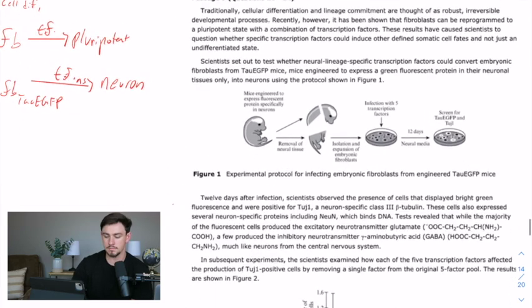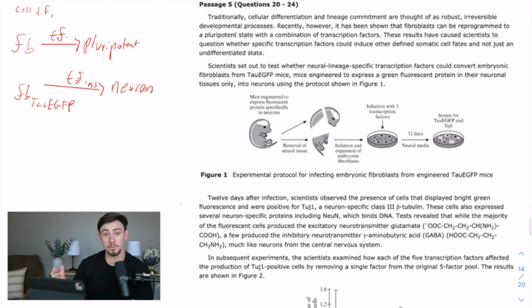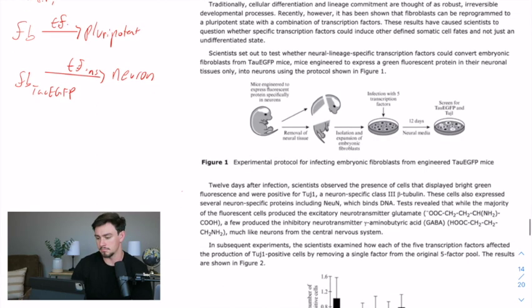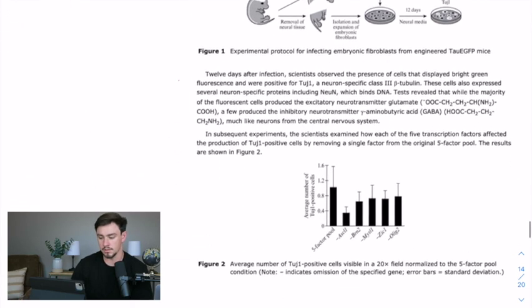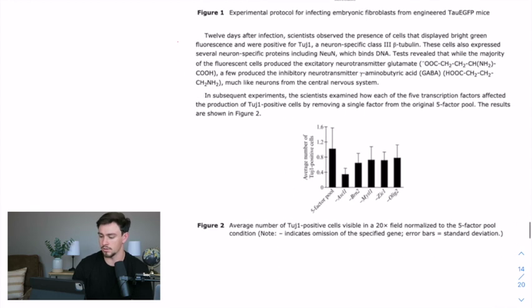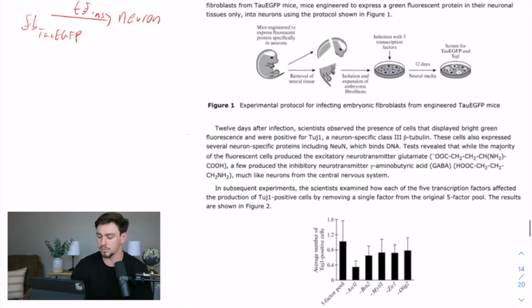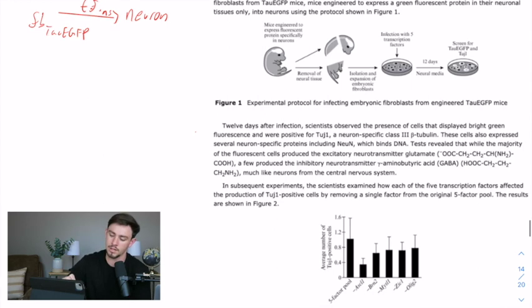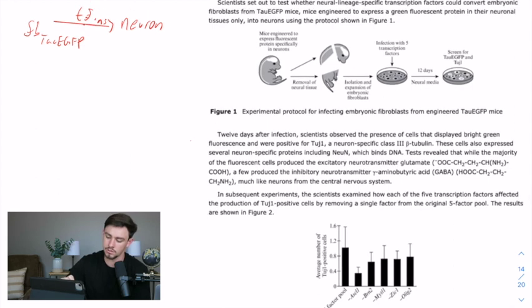Figure one. We'll jump into figures a little bit later, but for the most part they usually get skipped or briefly glanced over. So 12 days after infection, scientists observed the presence of cells that displayed bright green fluorescence and were positive for tau one. Okay. So 12 days after we use this transcription factor, we get some cells. They are positive for GFP, which means they are from this lineage, right? That should kind of be your basic science there, which reminds me, I forgot to elicit.